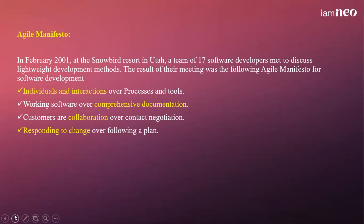Some of the Agile policies followed by companies are: first, individual and interactions over processes and tools. All the stakeholders involved in the project will interact among themselves and decide what tools are required for the development of the project and what type of software processes will be undergone. Next, comprehensive documentation of whatever stages they are covering, what flaws they are facing, and how they are rectifying them. At each phase and each iteration, the customer will collaborate among the stakeholders to check whether all requirements have been satisfied. Whatever change is given by the customer, the Agile team is ready to accept and implement it in the project.